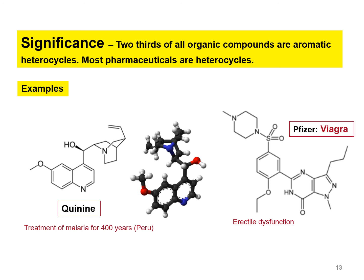Here I am showing some examples of pharmaceutically important drugs that contain heterocyclic rings in their structure. First, we can see quinine, which contains a heterocyclic ring. Quinine is an anti-malarial drug, though better anti-malarial drugs are now used. We can also see sildenafil, used for erectile dysfunction and famous as Viagra, which contains multiple heterocyclic rings in its structure.